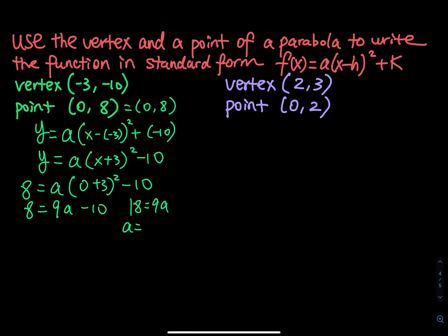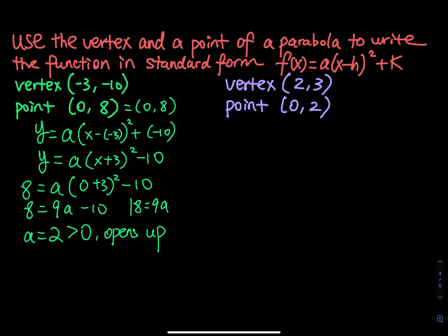When a is equal to 2, this is positive. That means the parabola opens up. Now we have a and we have the vertex, so we can write the standard form: f of x equals to 2 times x plus 3 square minus 10.